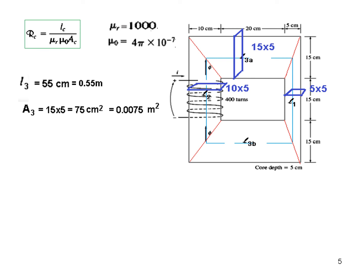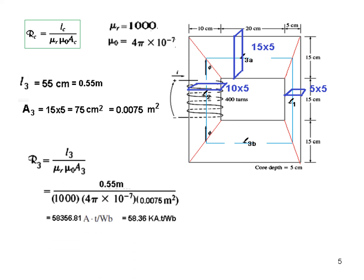And similarly for R3, we will use L3 and A3. Now this is A3, here and here same, 15 × 5. Now this is 15 and depth is 5, so 75 cm² equals 0.0075 meter square. So R3, again plugging in the values now, R3 is 58.36 kilo ampere turn per weber. So we have found all the three R's.